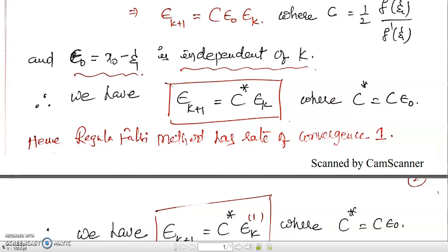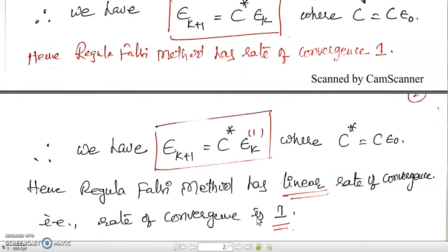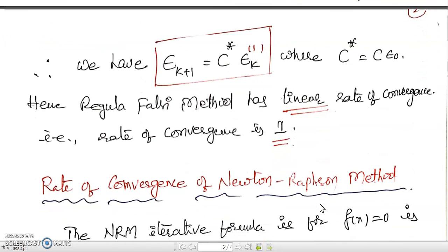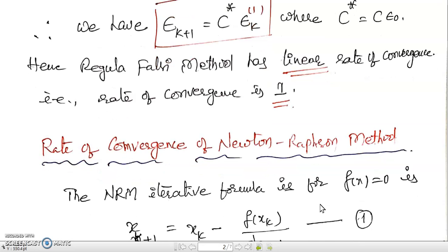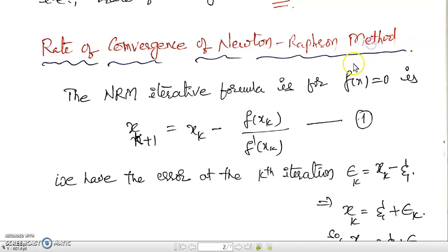So we have ε_{k+1} = c* · εk^1. Therefore, the regular falsi method has a rate of convergence of 1 and is said to have linear convergence. Now, another method: the rate of convergence of the Newton-Raphson method.